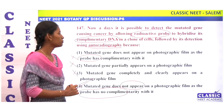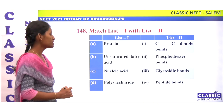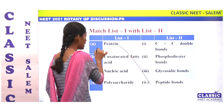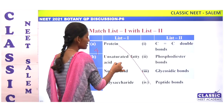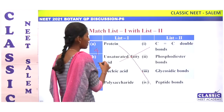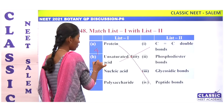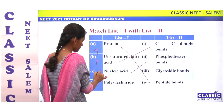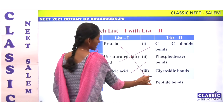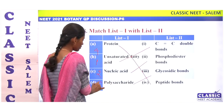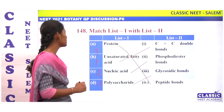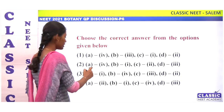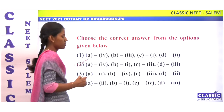Next match: protein — peptide bond — A is 4. Unsaturated fatty acid — C=C double bond — B is 1. Nucleic acid — phosphodiester bond — C is 2. Polysaccharide — glycosidic bond — D is 3. Match is 4, 1, 2, 3. Option 2.